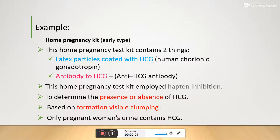This kit employs hapten inhibition and helps to determine the presence or absence of HCG based on visible clumping or agglutination formation. Only a pregnant woman's urine contains HCG, so this helps determine whether she is pregnant or not.